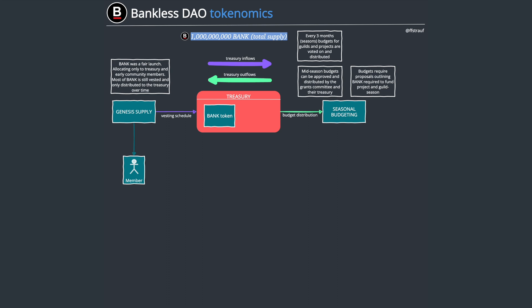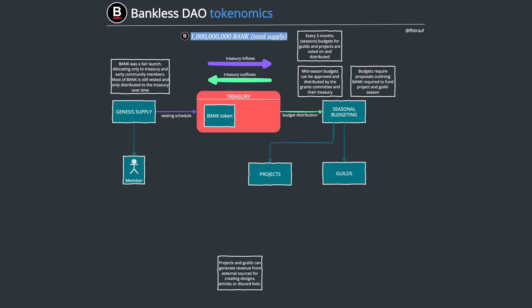How this all works is essentially through seasonal budgeting — seasons are like quarters in a corporation. Every three months there's a budget round where people of the DAO hand in a proposal. That proposal is discussed in the forum, then there's a Snapshot vote — an on-chain vote — where BANK token holders vote on the outcome. If approved, funds, mostly BANK tokens, are distributed to the requesting guilds or projects.